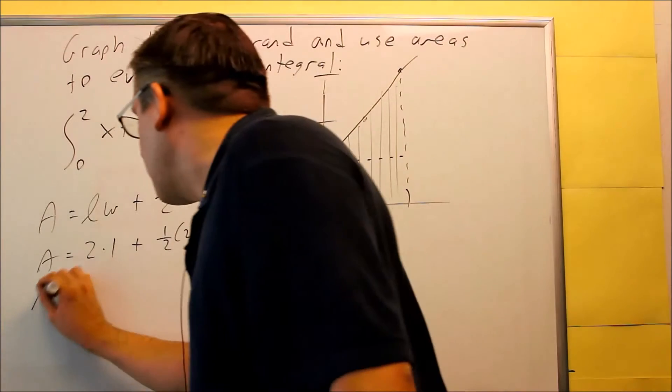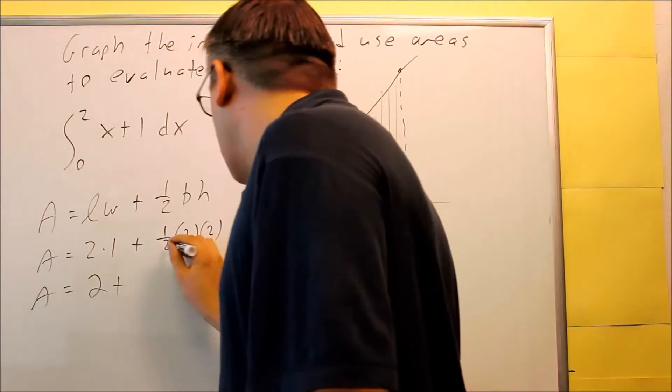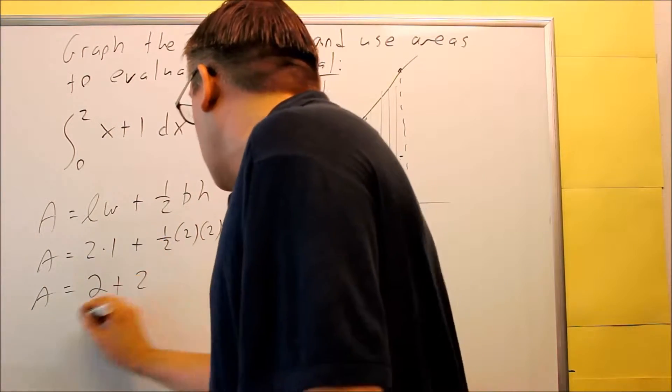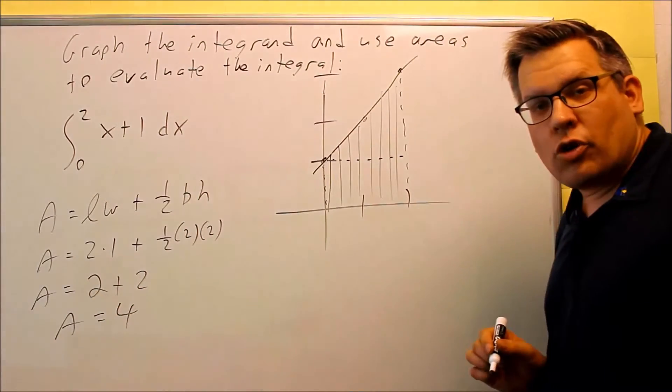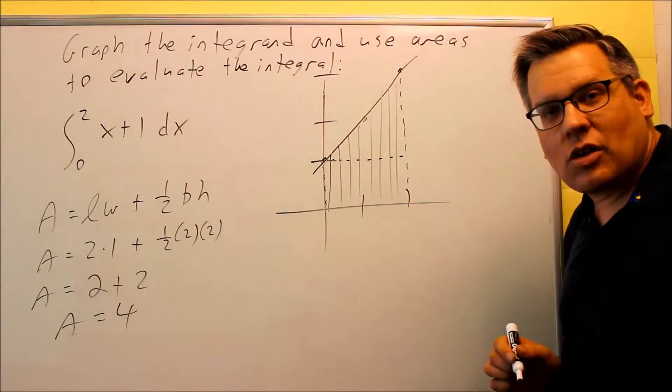Now we're just going to add it all together. 2 plus 2 is what you'll get here, so our area is going to be 4 square units. So now with that, let's take a look at another one.